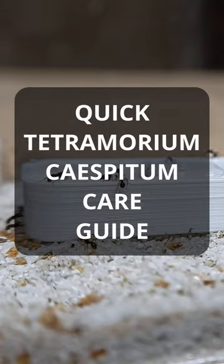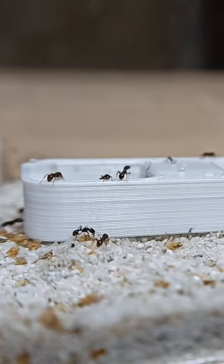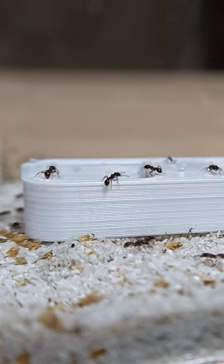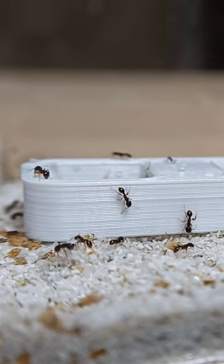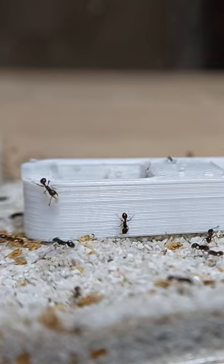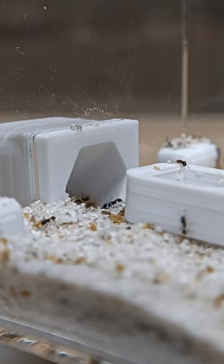Quick Tetramorium caespitum care guide. Tetramorium caespitum is a small, fast-growing species of ant, very easy to find all across the European continent. This species was originally only found in Europe, but thanks to frequent travels across the ocean in the 1700s, you can now also find them in some parts of North America.